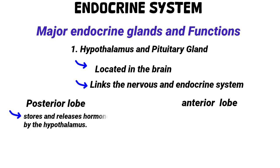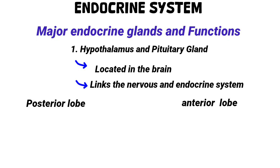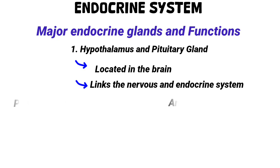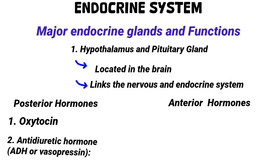The posterior lobe stores and releases hormones made by the hypothalamus, while the anterior lobe synthesizes and secretes its own hormones under hypothalamic control. The posterior pituitary hormones include oxytocin, which stimulates uterine contraction during childbirth and milk ejection during breastfeeding, and also promotes bonding and affection. The second hormone is the antidiuretic hormone, also called ADH or vasopressin, which helps the body conserve water by reducing urine output when blood osmolarity rises or when blood pressure drops.